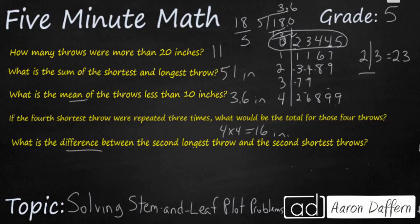And what is the difference between the second longest throw and the second shortest throw? It's going to be 49 inches minus 3, it's going to give us 46 inches.